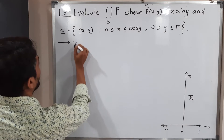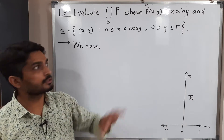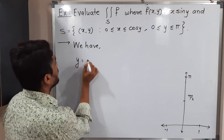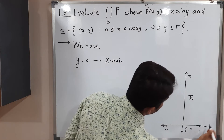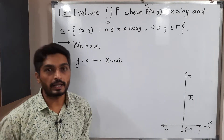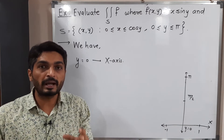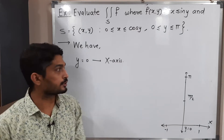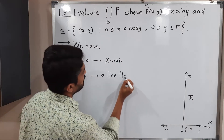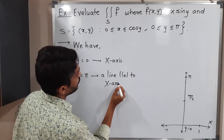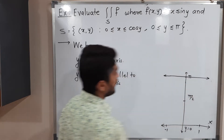Let me mention which curves bound the region. We start with simple curves. Y is equal to zero represents the X axis. Next is Y is equal to pi — we consider equality to draw the curves and then the region bounded by all these curves gives the region of integration. Y is equal to pi represents a line parallel to the X axis, passing through Y equals pi.